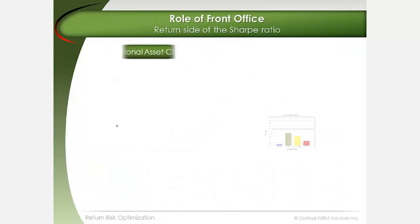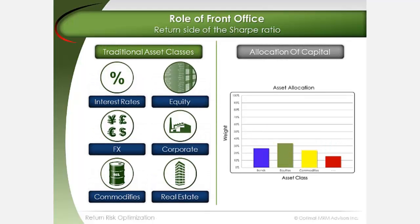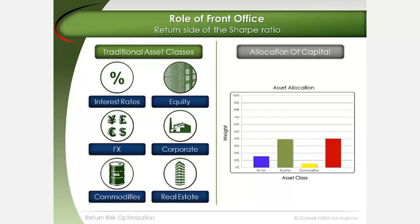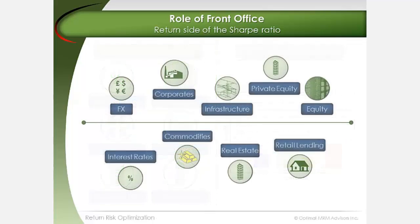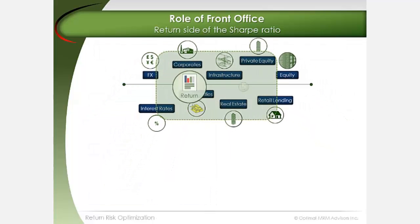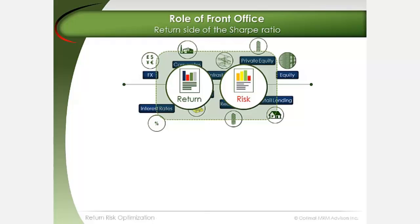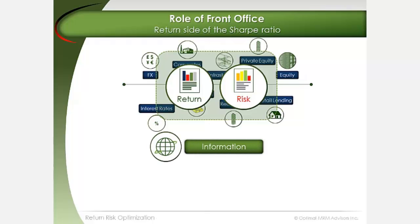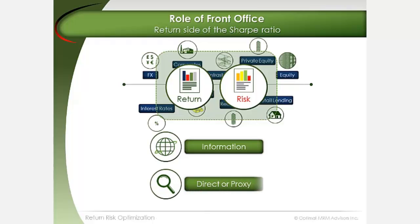Classic portfolio theory teaches that asset allocation is the largest driver of overall portfolio return, followed by selection within an asset class. Conceptually, each of these classes has an expected return and risk profile. In a rapidly developing information era, it is gradually becoming easier to measure return and volatility on just about any investment or business activity, whether through direct observation or proxy measurement.